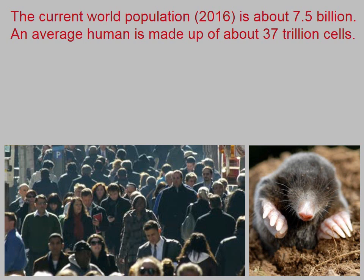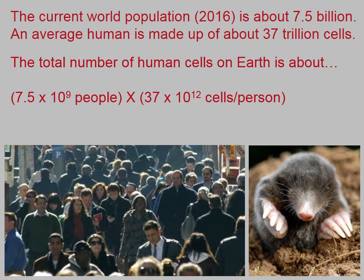Here's one more example. As I'm making this recording, the year is 2016. The current world population is about 7.5 billion people. The average human has about 37 trillion cells. Bone cells, muscle cells, skin cells, etc. So the total number of human cells on Earth in 2016 is 7.5 billion people multiplied by 37 trillion cells for every person. That's 2.8 times 10 to the 23rd cells. That's less than half a mole.